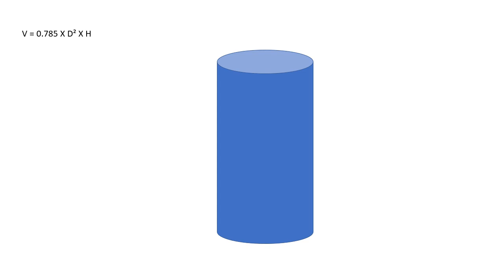In case you didn't know what a cylinder looks like, here's a picture of a cylinder. The formula for finding the volume of a cylinder is again 0.785 times the diameter squared times the height. The diameter of a cylinder is shown here, and then you're going to be multiplying that again by the height of the cylinder.